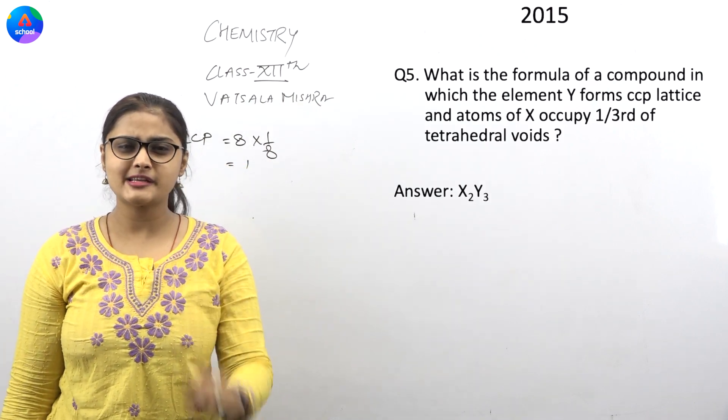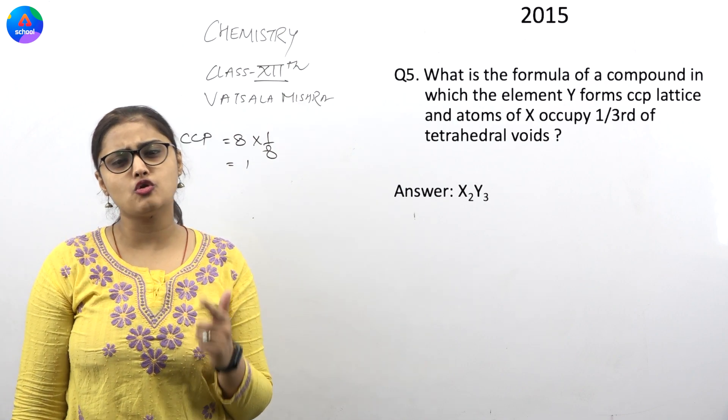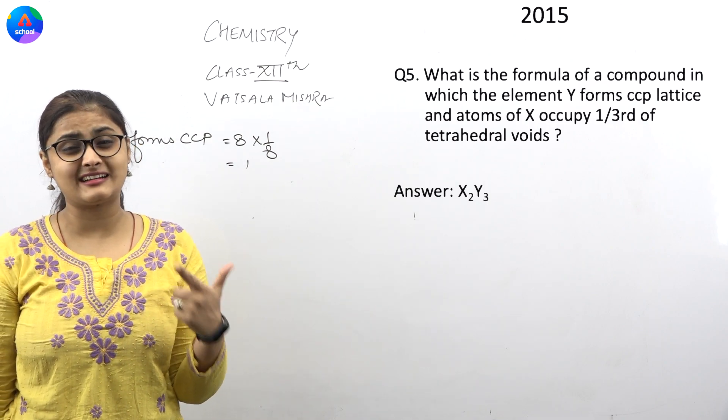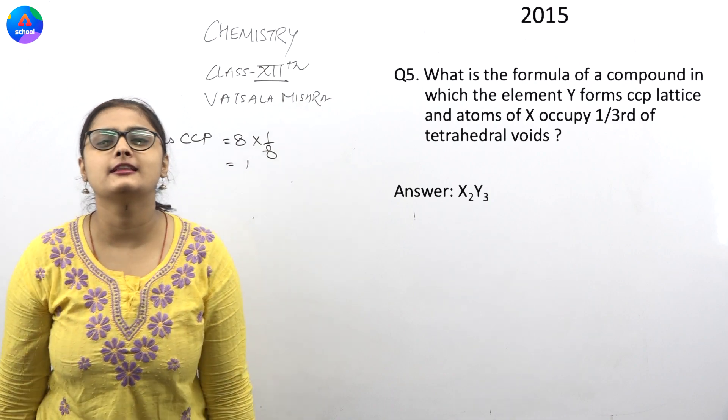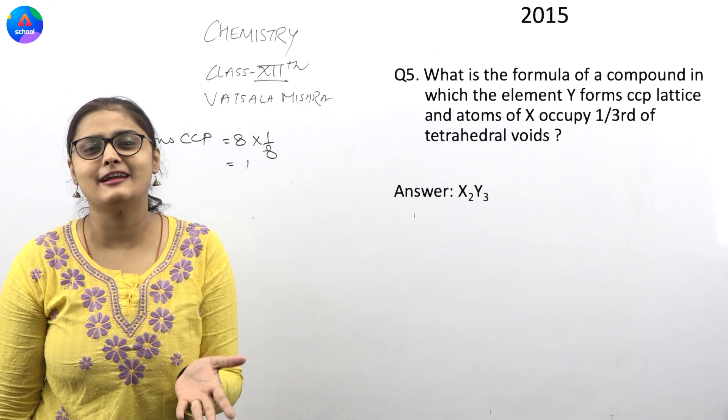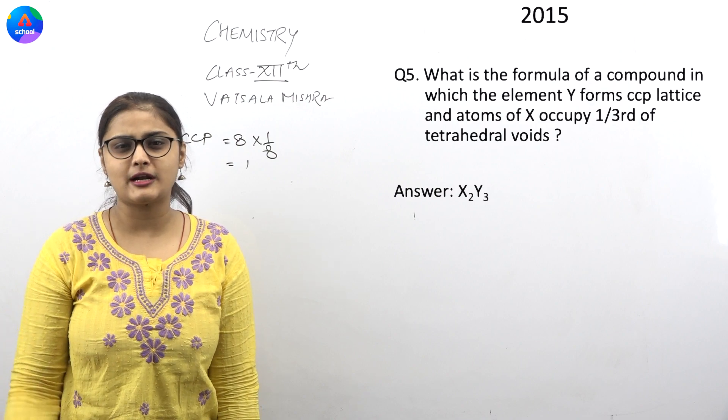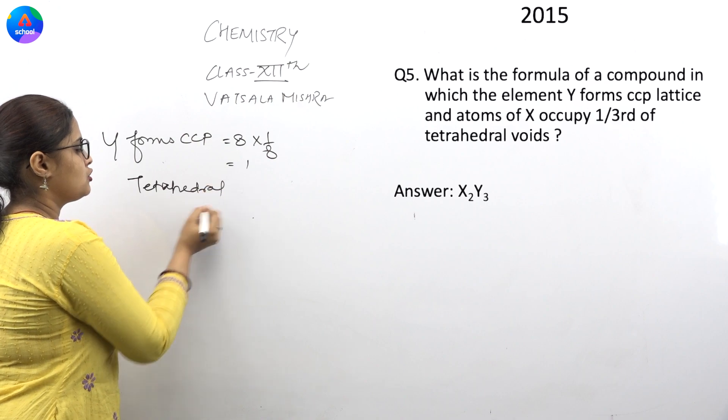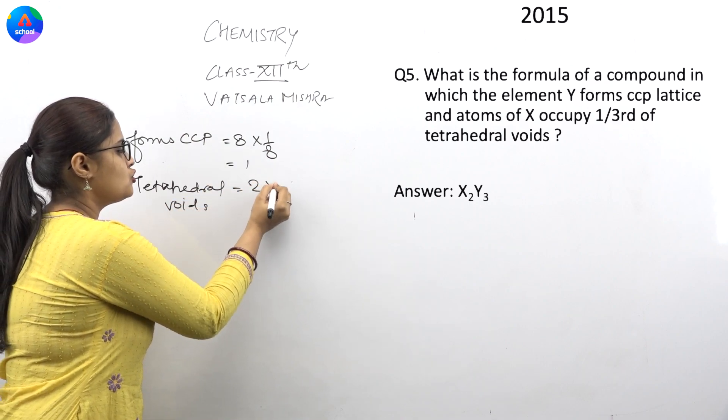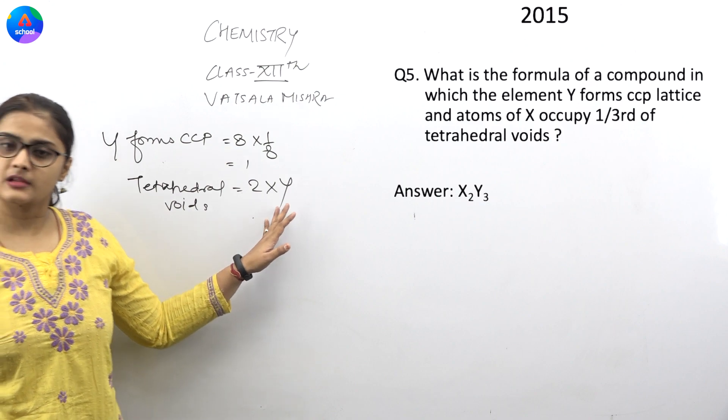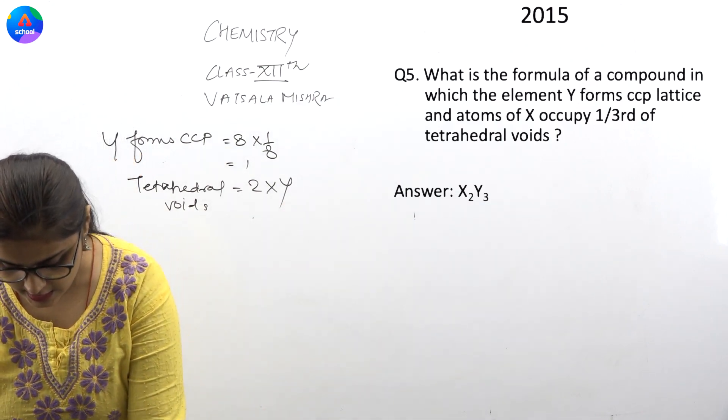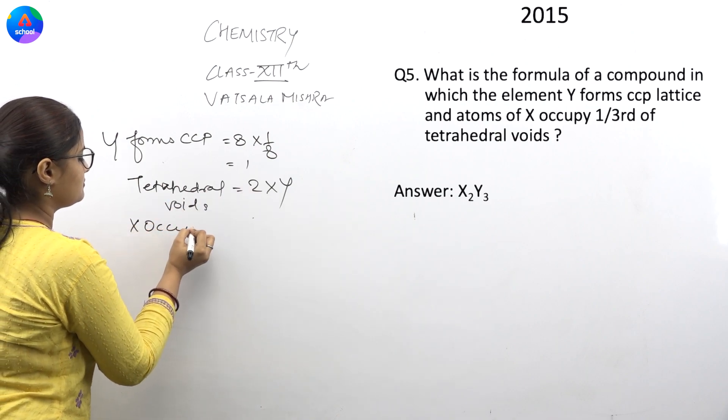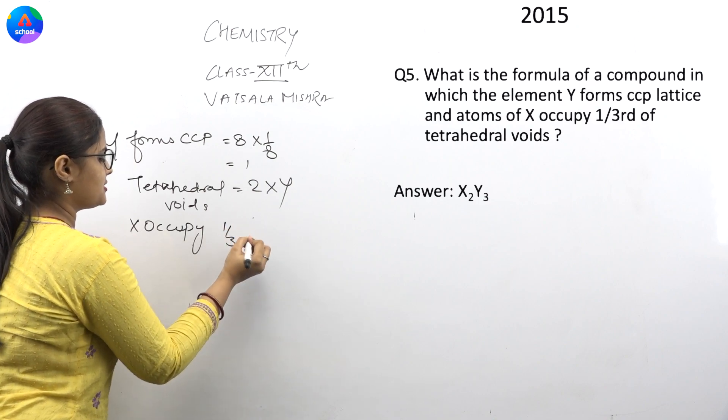But if you have asked that the atoms of X have occupied one-third of tetrahedral voids, you have to know that the atoms of tetrahedral voids are asking you. So basically, if you talk about tetrahedral voids, then you will take 2 into Y. Now, what will happen 2 into Y?